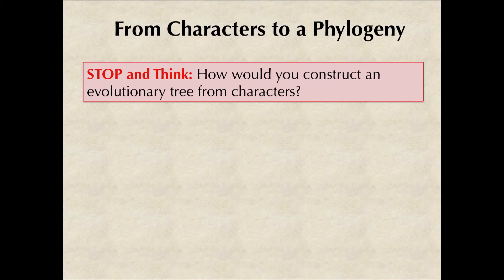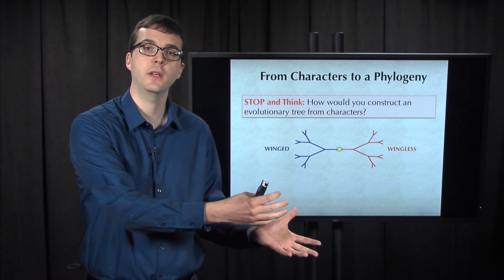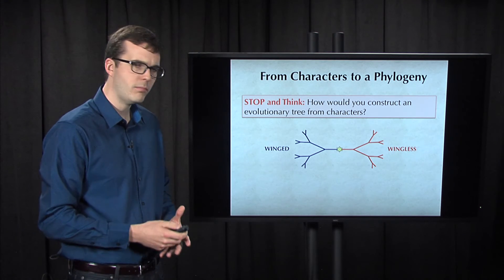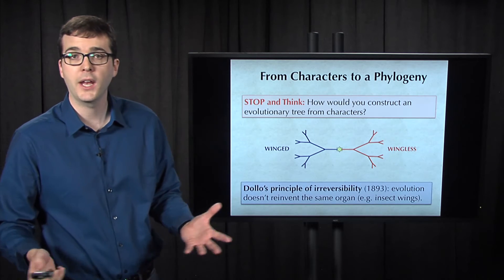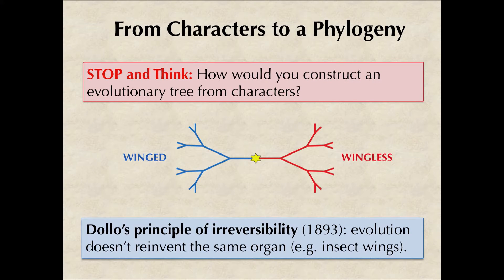If you think about how we would construct an evolutionary tree from characters, one idea would be to cluster all organisms having the same character on one side of the tree together. For example, if we're considering wings and stick insects, we should probably put all winged stick insects on one side of the tree, and all the wingless stick insects on the other. This strategy is completely reasonable and it's in keeping with an over 100-year-old postulate called Dollo's Principle of Irreversibility.